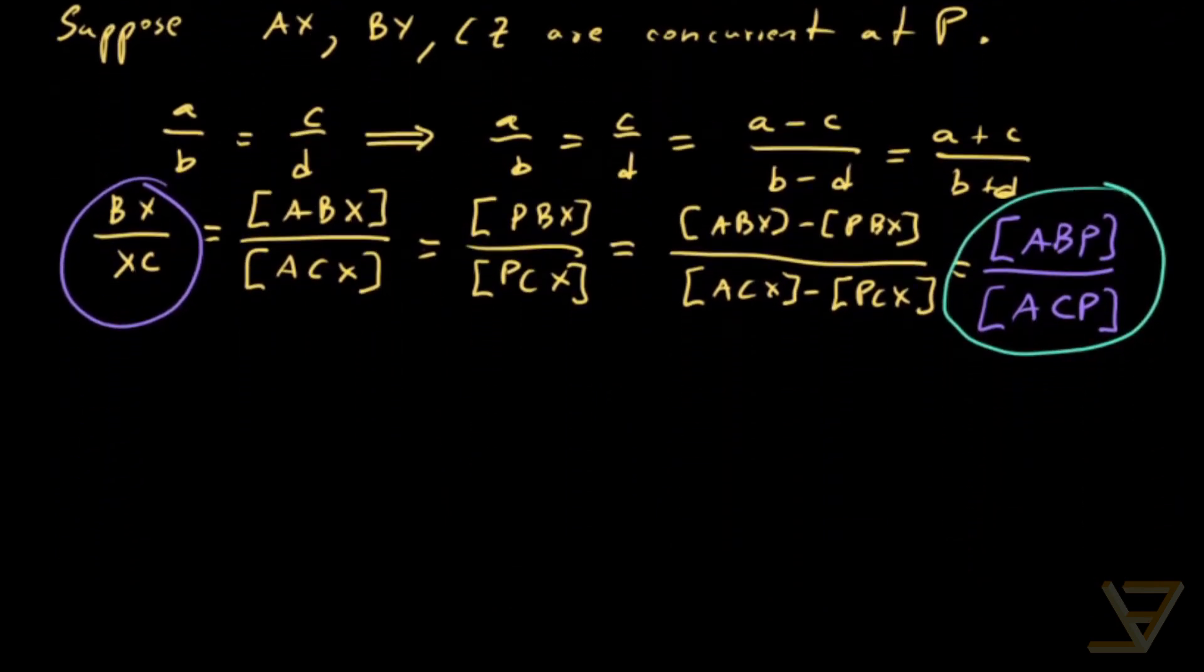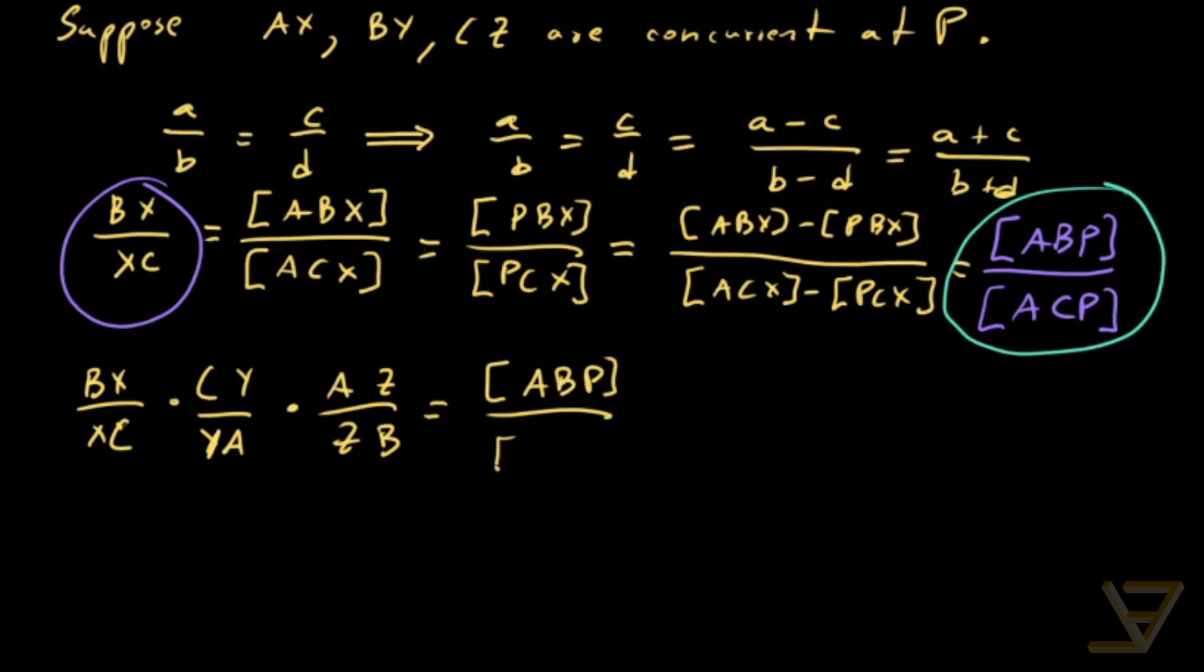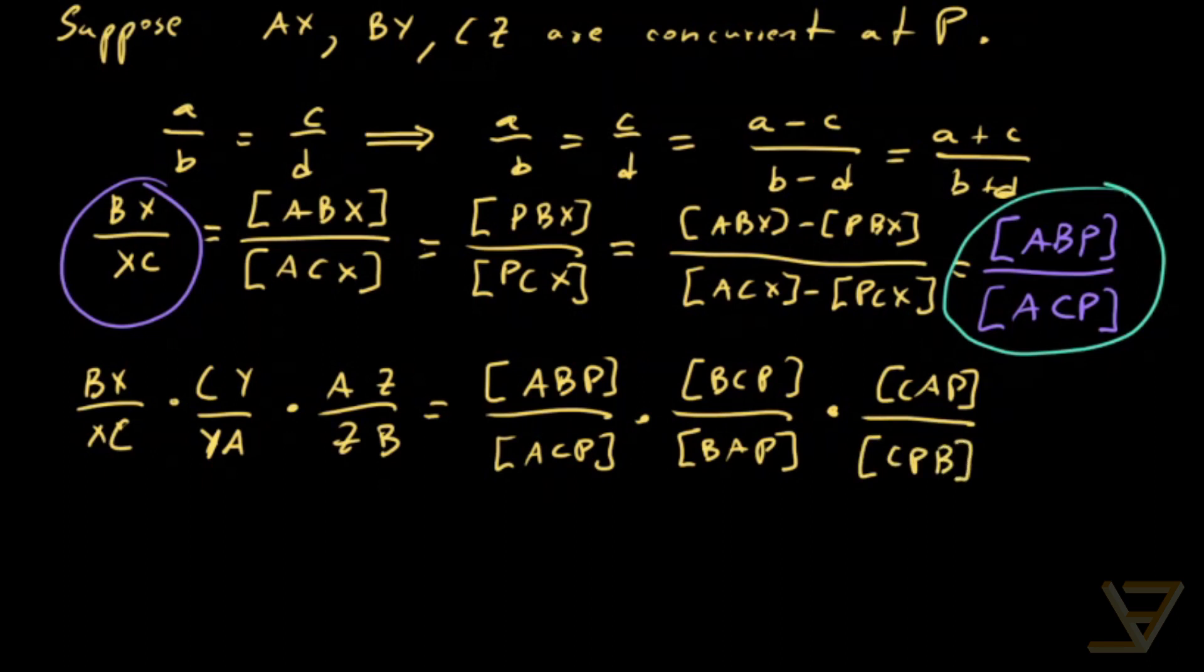If we multiply it all out, we get that BX over XC times CY over YA times AZ over ZB is equal to ABP over ACP times BCP over BAP times CAP over CBP. So let's see what cancellations we get here.